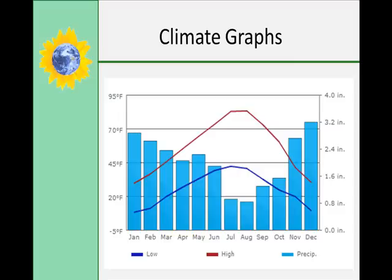Climate graphs are graphs of the average temperature combined with a graph of the average precipitation by month. The graph on this slide is the climate graph for New Meadows, Idaho, in Adams County.